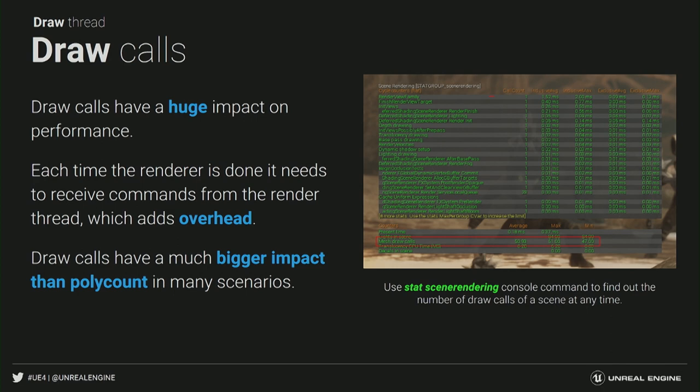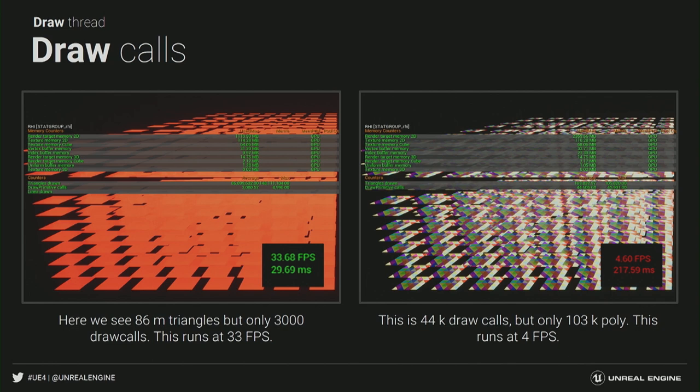A really useful tool for debugging draw calls is RenderDoc, which is an open source tool. To illustrate: you can have millions of triangles but only 3,000 draw calls and get a decent 33 FPS, versus a scene with 44,000 draw calls and far fewer polygons running at only 4 FPS — because each triangle in the scene is using a different material.